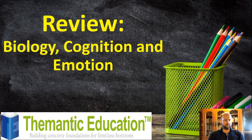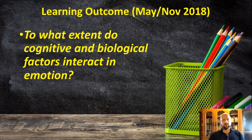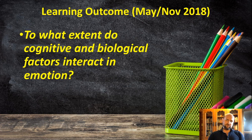I've had another request to review arguably one of the hardest topics in the IB Psychology course: biology, cognition, and emotion. This is a pretty tricky one. A reminder this is for May/November 2018, the old syllabus, with the learning outcome: to what extent do cognitive and biological factors interact in emotion? The topics I'm going to explain are relevant to the new syllabus, but not in the way I'm going to explain them.